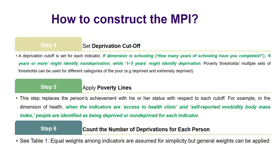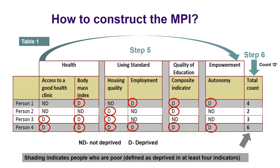Then you count the number of deprivations for each person with equal weighting. Let's see Table 1, where I will answer steps four, five, and six — since steps one, two, and three we already addressed within the global MPI. Suppose I have four persons in my database. Of course you would not have just four — it would not be representative — so we just take a snapshot, as UNDP does with the global MPI, to explain deprivation and non-deprivation.